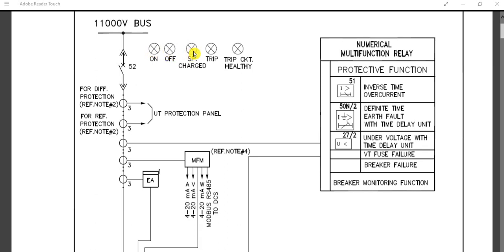Additional LED indications include: breaker tripped and trip circuit healthy. All these LED indications show the circuit breaker status — whether the breaker is on or off, whether the spring is charged, whether it has tripped, and whether the trip circuit is healthy or unhealthy.